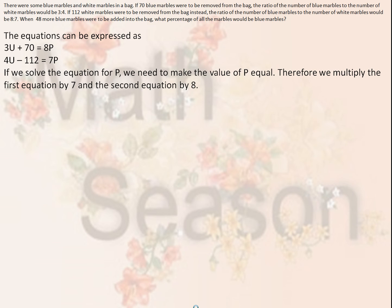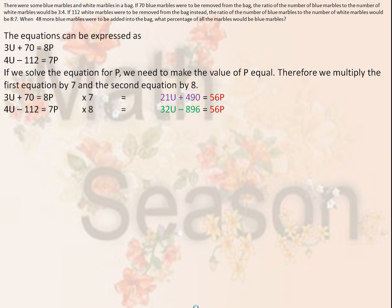To solve the equations for p, we need to make the value of p equal. We multiply the first equation by 7 and the second equation by 8. This gives us 21u plus 490 equals 56p, and 32u minus 896 equals 56p. Note that we multiply the entire equation — including the constants 70 and 112 — by 7 and 8 respectively.